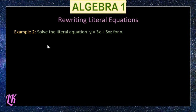In the second example, the equation is y = 3x + 5xz and we are solving for x. That means x should be on one side of the equation. In the original equation, you will notice that 3x and 5xz have the same variable x. Therefore, we can factor out that x using the distributive property.